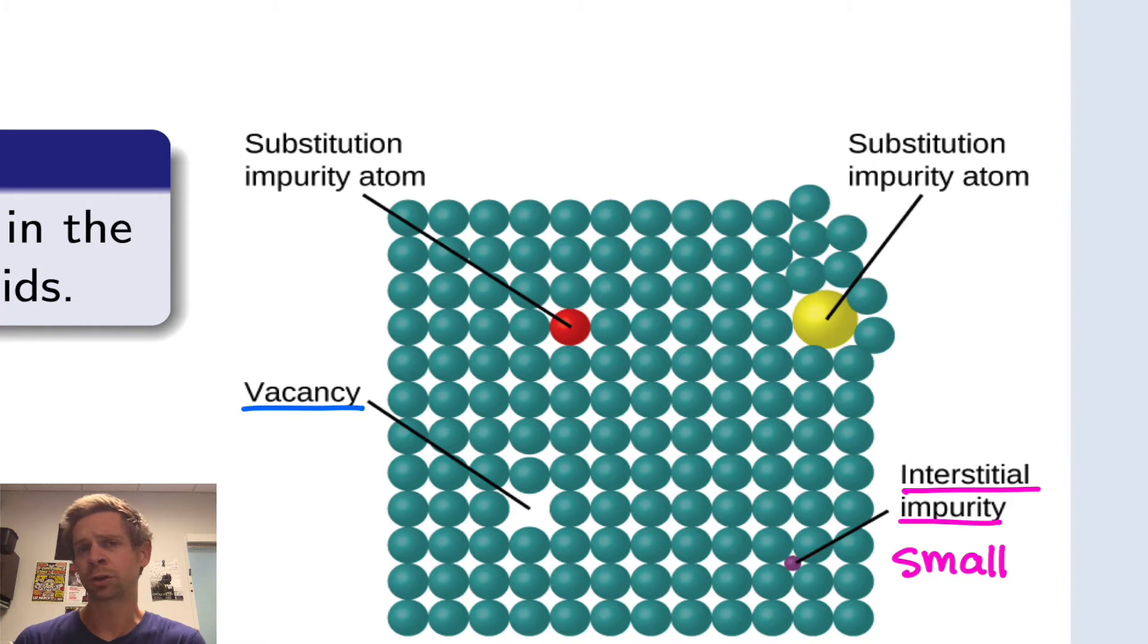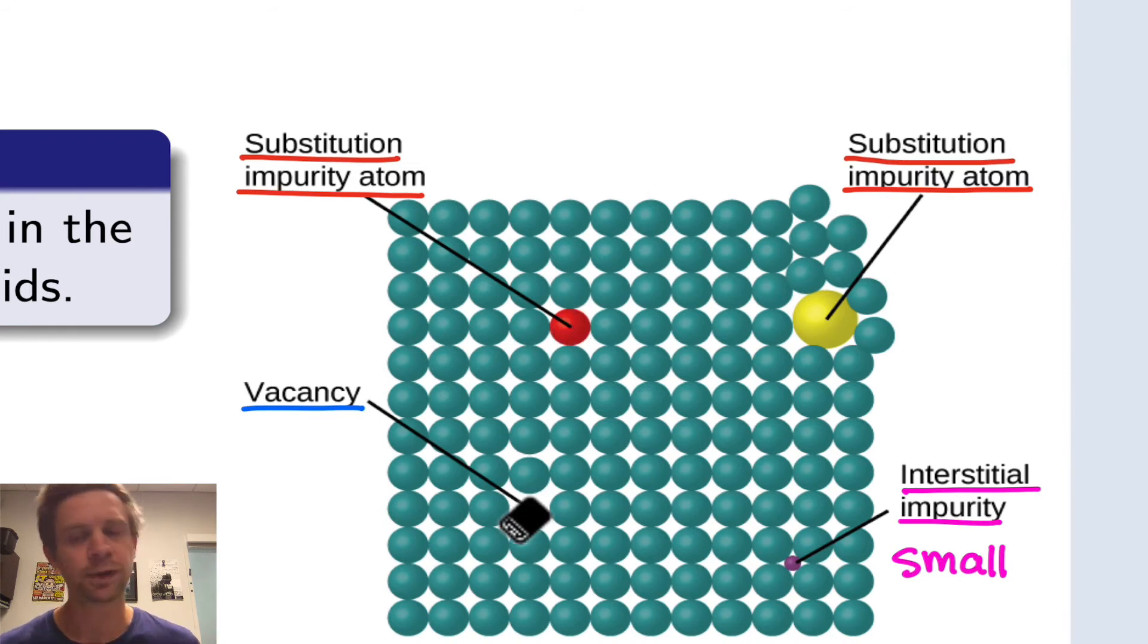We also can have what are called substitution or substitution impurities, where a different atom or molecule takes the place of one of the atoms or molecules in the larger crystalline lattice. So for example, we can have substitution impurities where the substituting atom or molecule is on the same order in terms of size as the atoms or molecules in the crystalline lattice. That's represented here in red, where an atom that's of comparable size to the blue-green atoms is sitting at what would otherwise be a vacancy is one way to think about it.